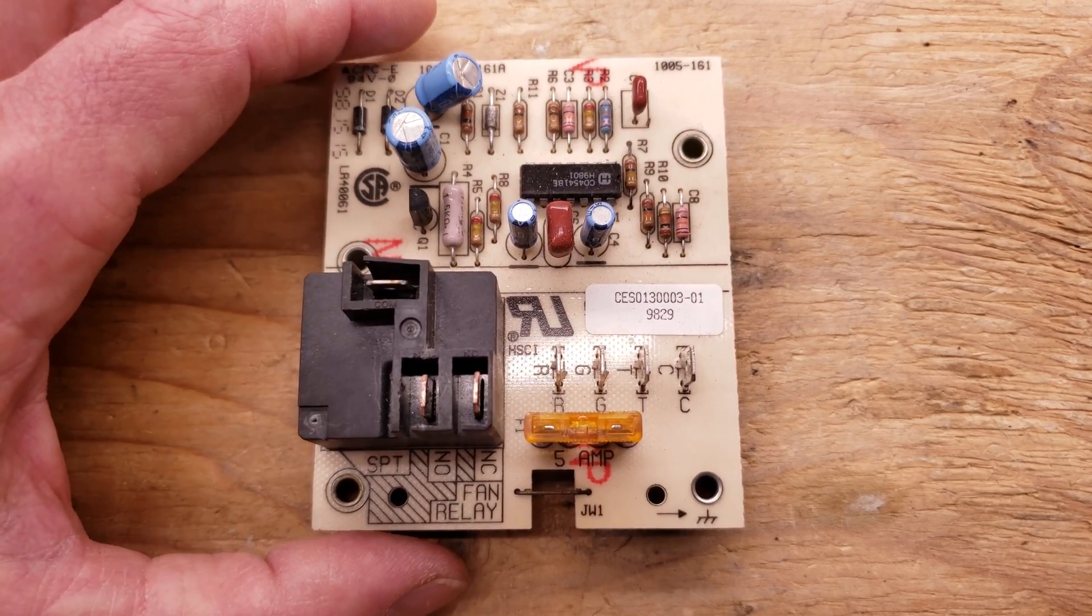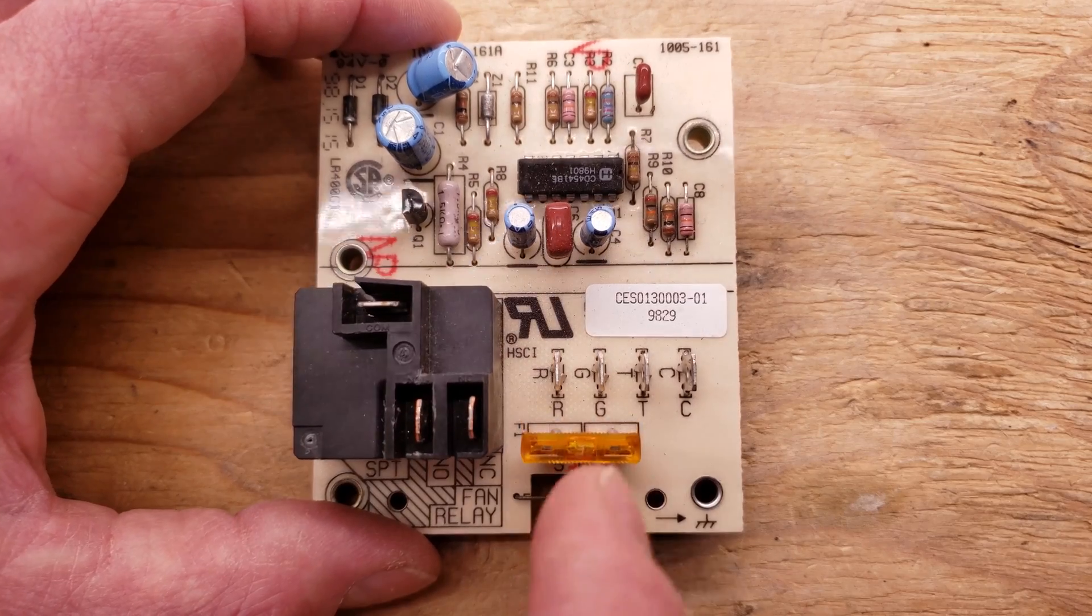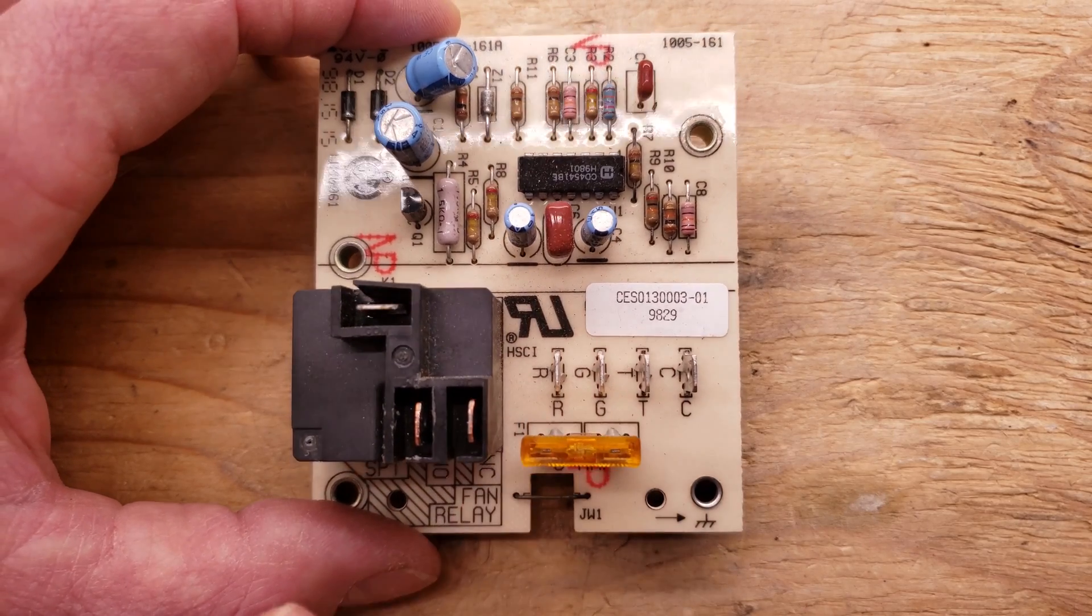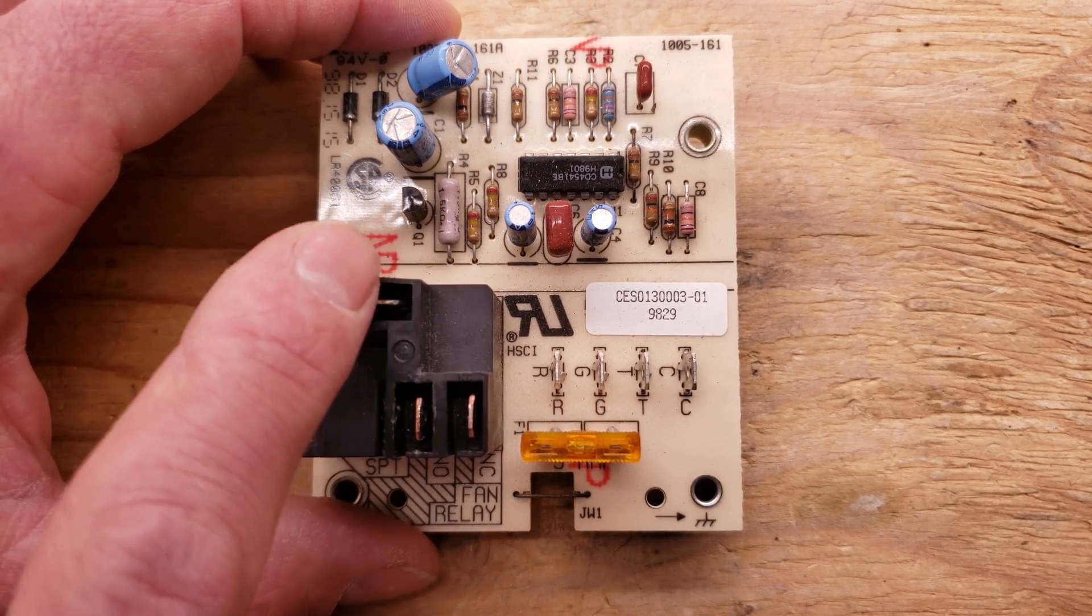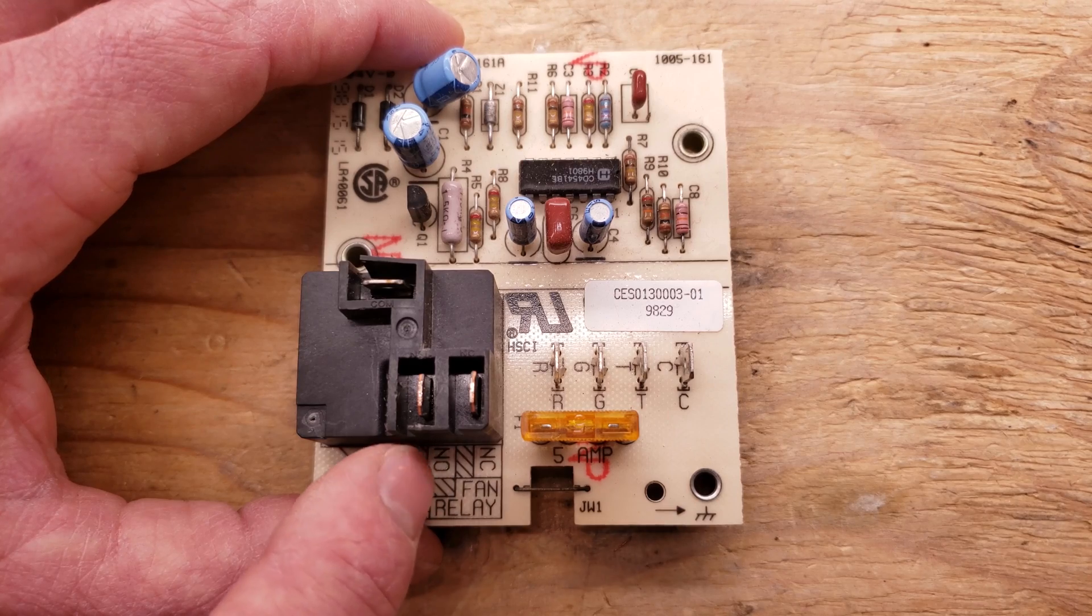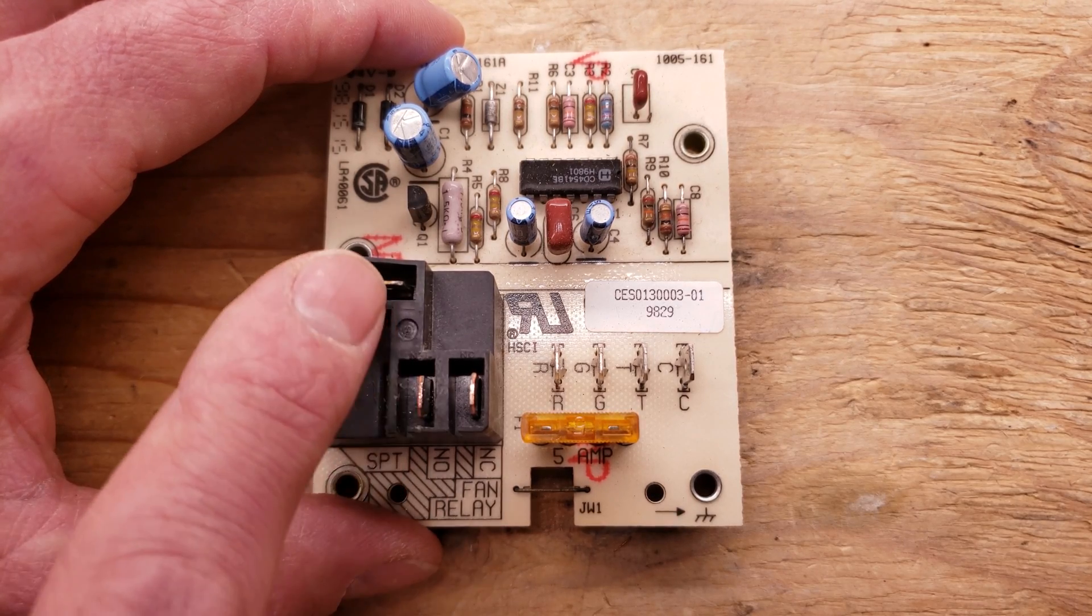Now the board has a delay built into it, so that when you send 24 volts to the G, your connections between the common terminal here and the NO, which is normally open, may take a few seconds to close.